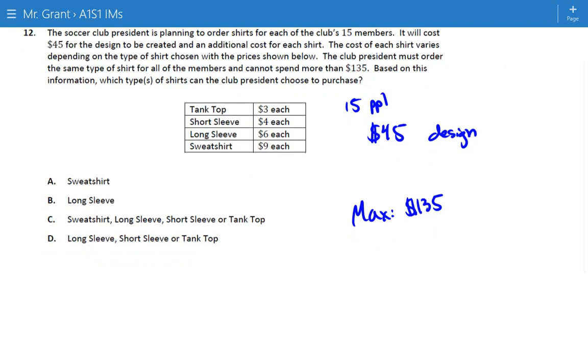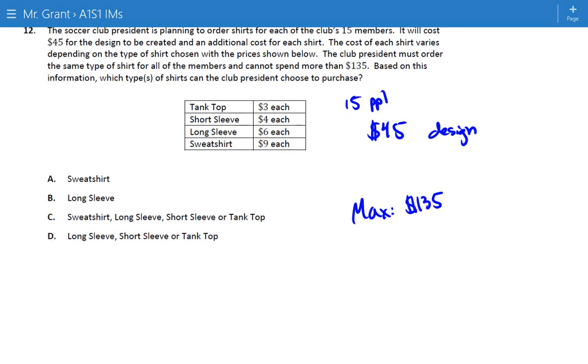There's any number of ways to do this. I'm going to give you the real way first, the algebraic way, and then we can talk about some guess and check. The idea behind this is we have $45 that we know we have to spend on the design. That's only going to happen once. It's not $45 per shirt. $45 times 15 is already too far over our budget. And then we're going to add on some cost.